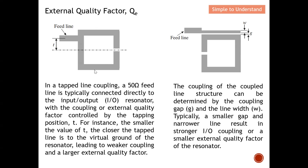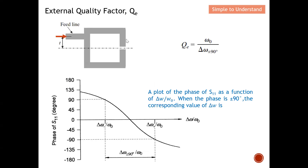In our earlier design we used tap line coupling, so this video will focus mainly on tap line coupling. To obtain the external quality factor Qe, we place a simulator port at the input of the structure and run the simulation. After running, we obtain both the magnitude and the phase of S11. For extracting Qe, we only need the phase of S11 — the magnitude can be omitted.